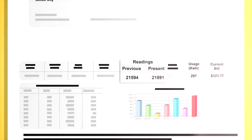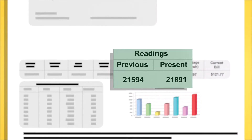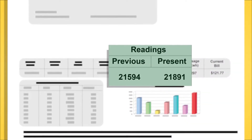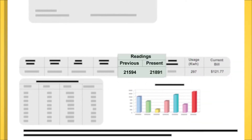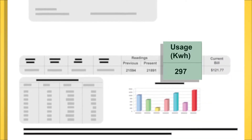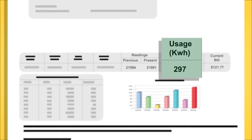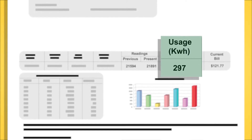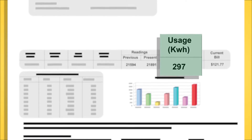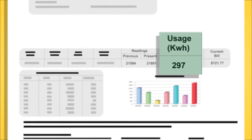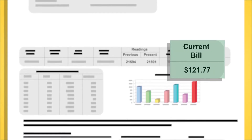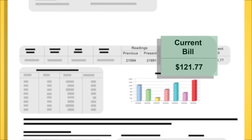At the top of your bill, you will see your last and current meter readings, total usage of electricity per kilowatt hour, which is the current reading minus the last reading, and the total cost of your bill.